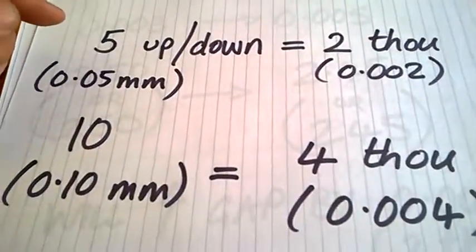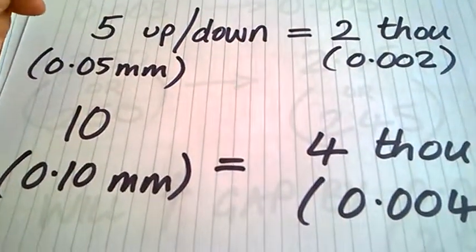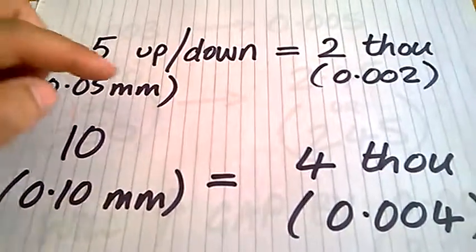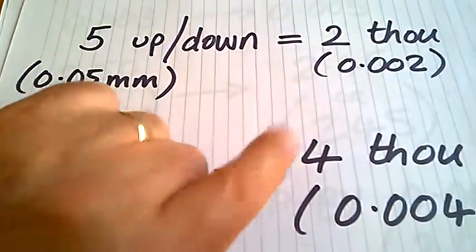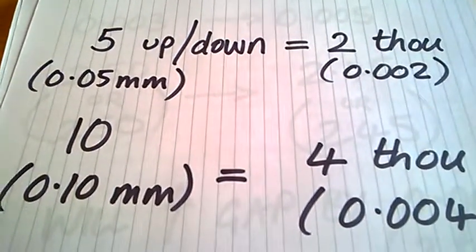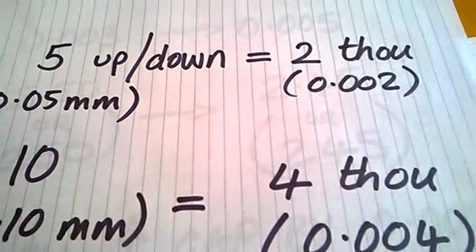then if you're going up or down by 5 on the number on the shim, which is the equivalent of 0.05 millimeters, that's going up or down 2 thousandths. So if the number on the shim went down from 250 to 245, you'd be changing by 2 thousandths at the valve clearance.